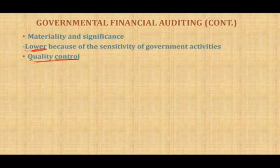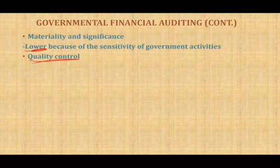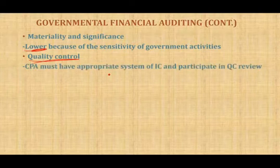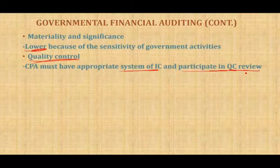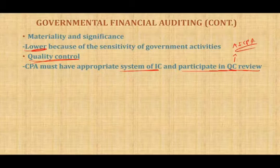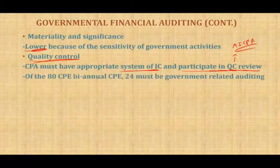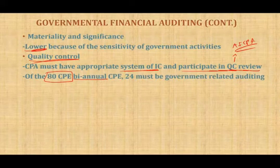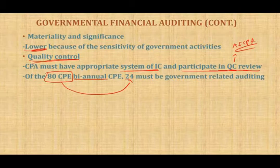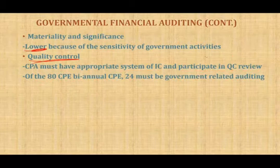Quality control: all firms must ensure their employees are trained, work is reviewed, and so forth. If you are doing governmental auditing, you must have specific quality control in addition to regular requirements. CPAs must have an appropriate system of internal control and participate in quality control reviews. Also, CPAs involved in governmental auditing must obtain 24 of their required 80 biennial CPE credits in governmental-related auditing, to ensure familiarity with the relevant rules and regulations.